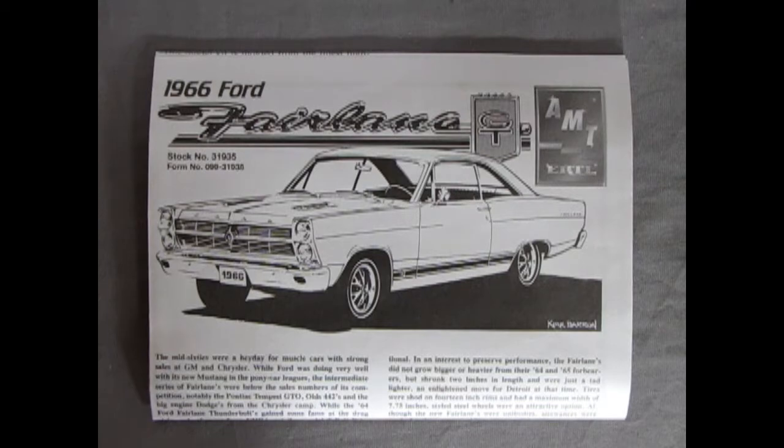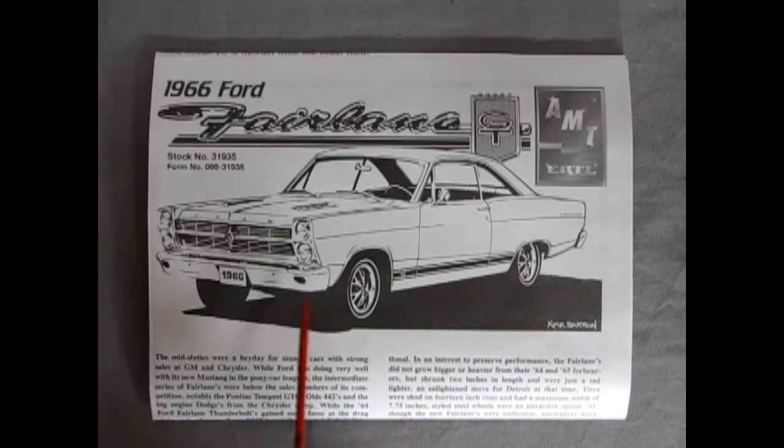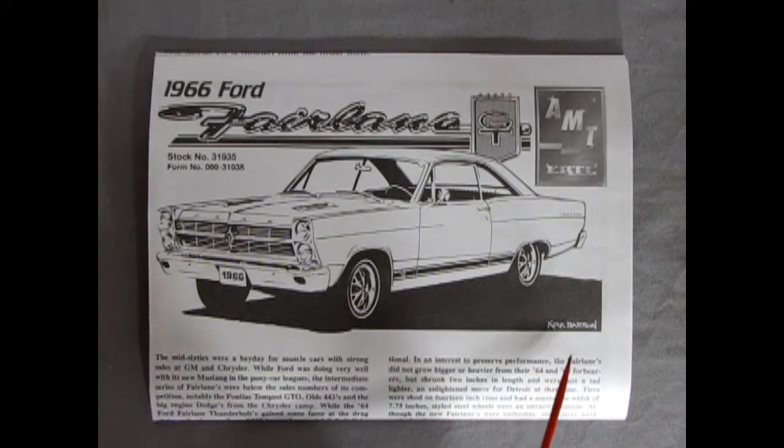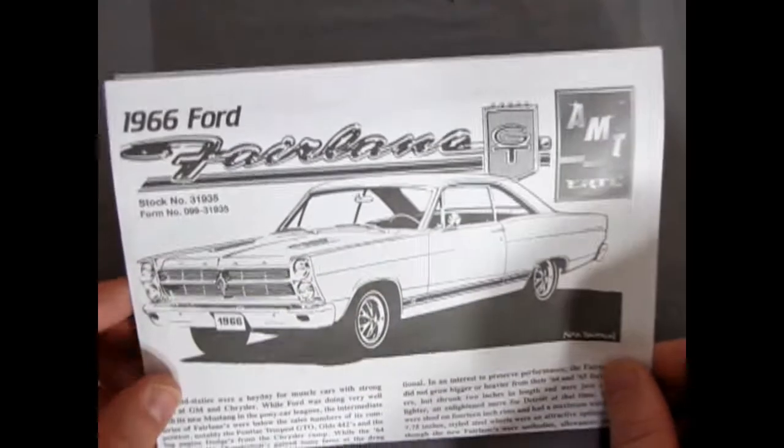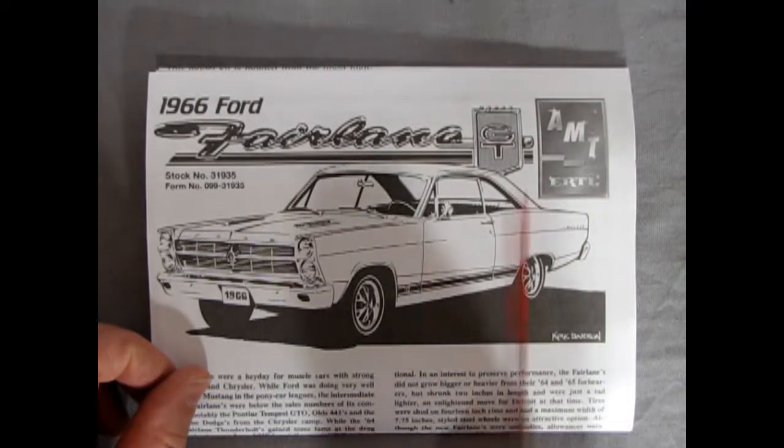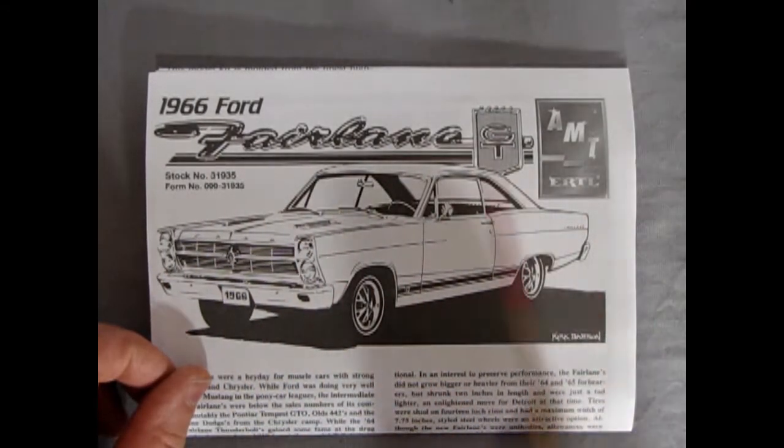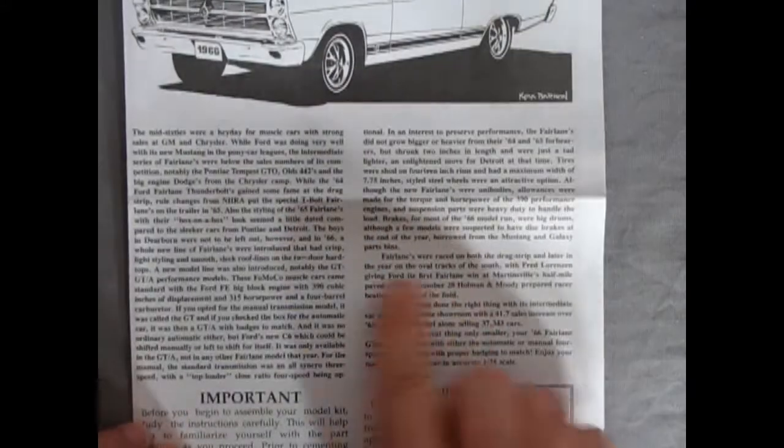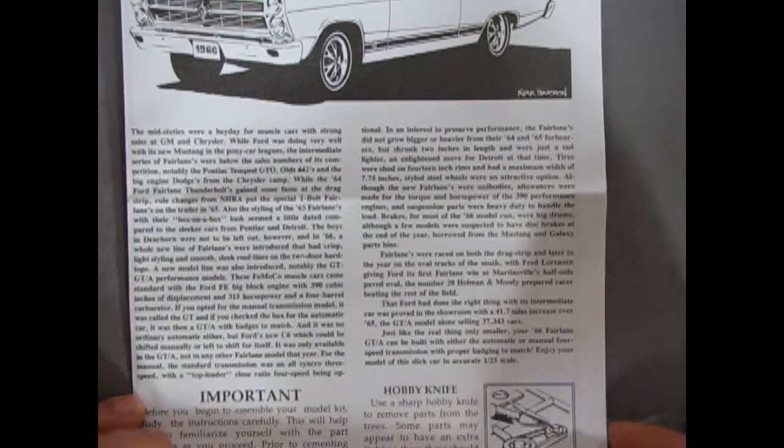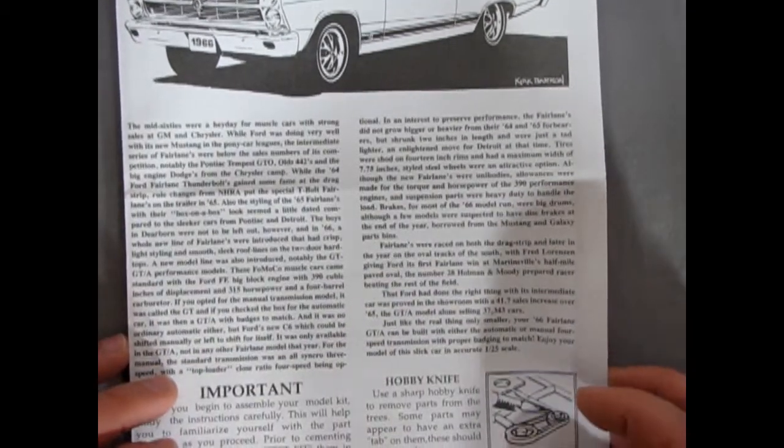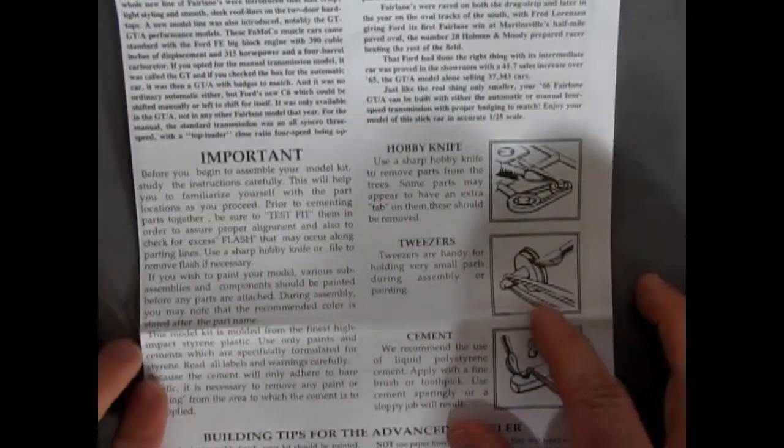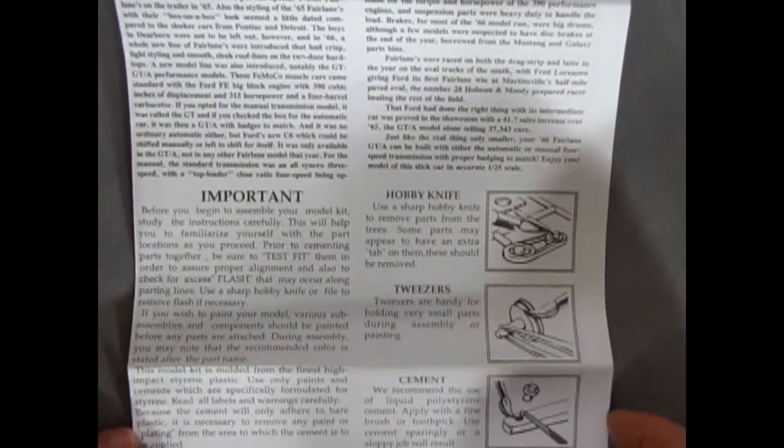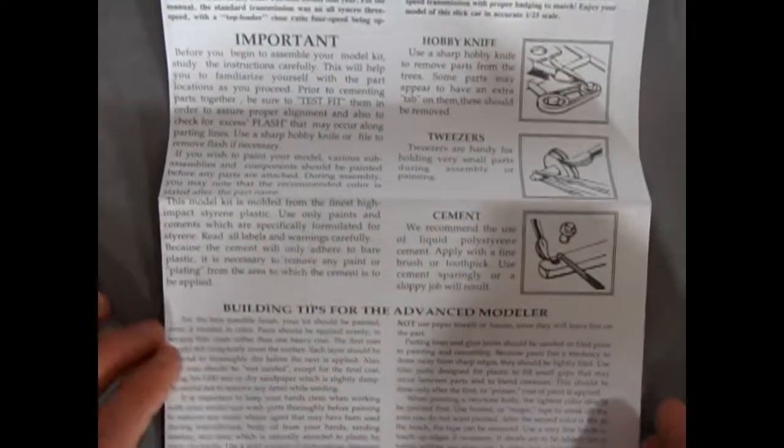And now we look at our Ford GT GTA instruction sheet and we got this nice illustration here of the car by Kirk Baron. Very good, very well drawn. I always like these kind of things because you could color it or you can photocopy this or put it in your computer printer and make a copy and then color it in the way you want it to be before you even paint. So they give you this really huge write-up for the 66 Ford Fairlane which you guys can end up reading on your own when you get this model. Then of course we have our important building tips and the safety. And then building tips for the Advanced Modeler down below.